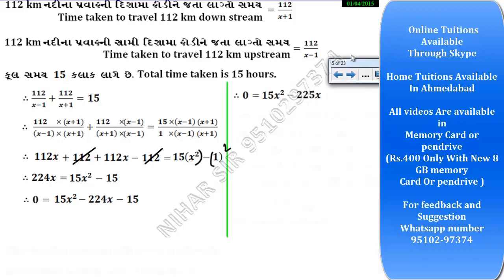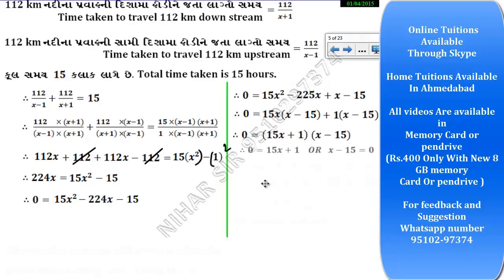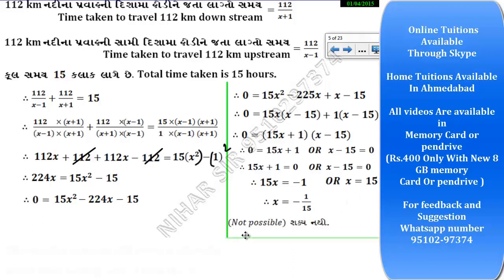Writing the factored form: 15x² minus 225x plus 1x minus 15. Taking 15x common from the first two terms gives 15x(x − 15), and taking 1 common from the last two gives 1(x − 15). So (x − 15)(15x + 1) = 0. This gives x = 15 or x = −1/15. The negative value is not possible, so the speed of the boat in still water is 15 km per hour.